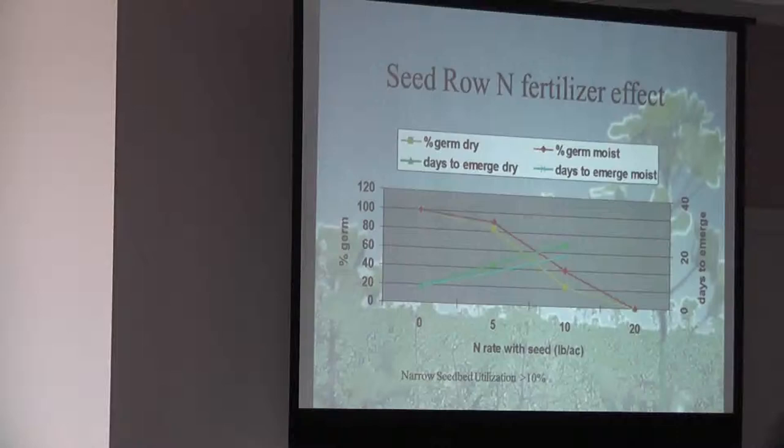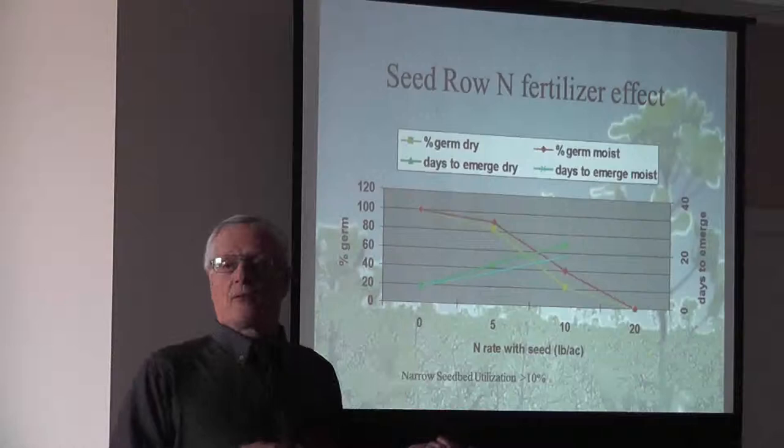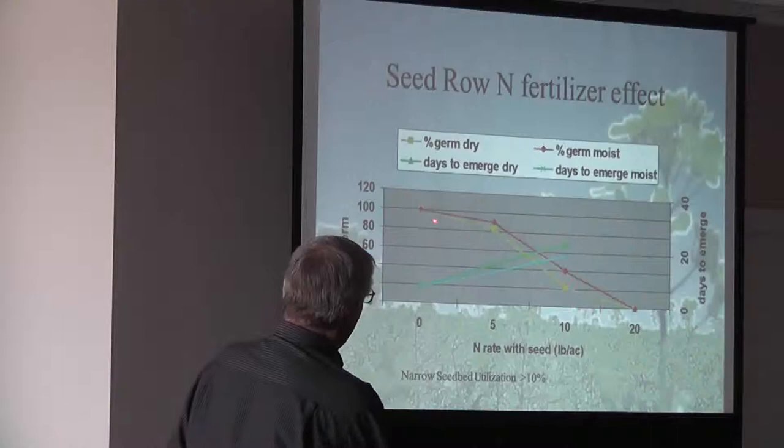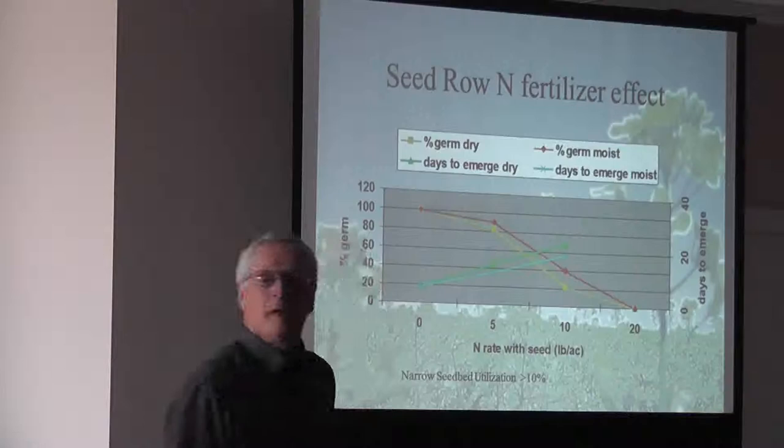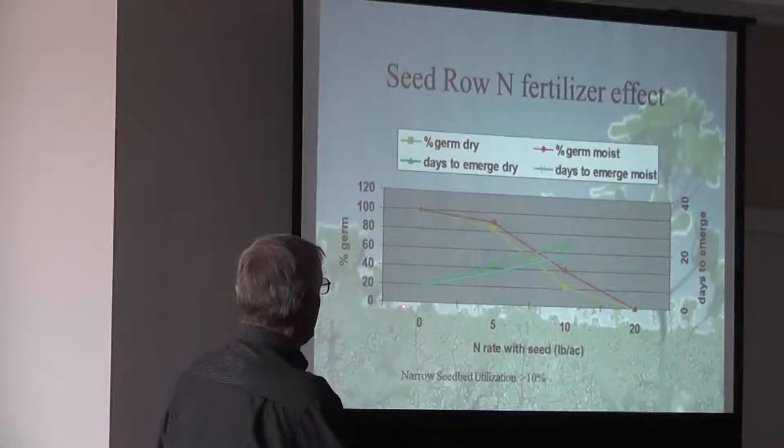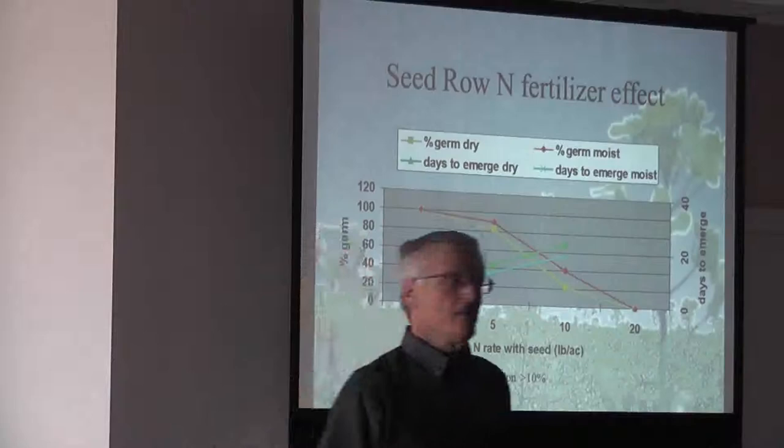A very high percent of difference. To show you what impact that has with a very narrow double disc press drill, you can see under drier conditions—that green line, the red line is five pounds of N—you've already got a bit of a drop. But at 10 pounds of N we're down to 40 percent of the seed making plants. It's going to have a dramatic impact.